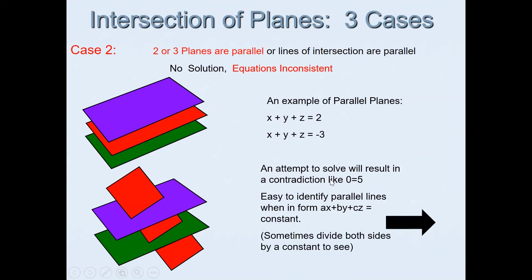An example of that could be: x plus y plus z equals 2, and x plus y plus z equals negative 3. These are parallel planes, and if you attempt to solve this you'll end up with a contradiction like 0 equals 5, which tells you there are no solutions.